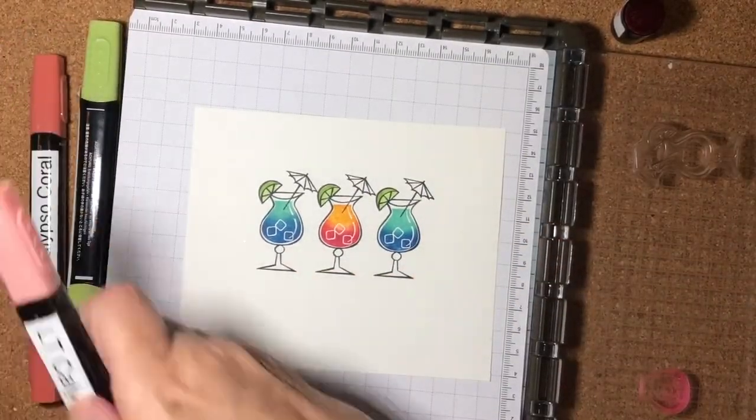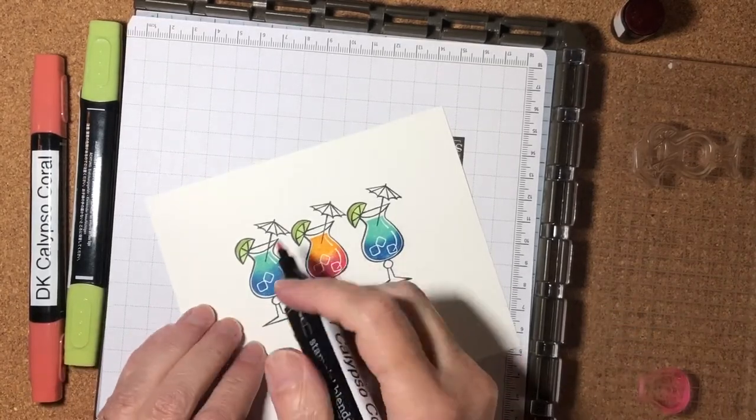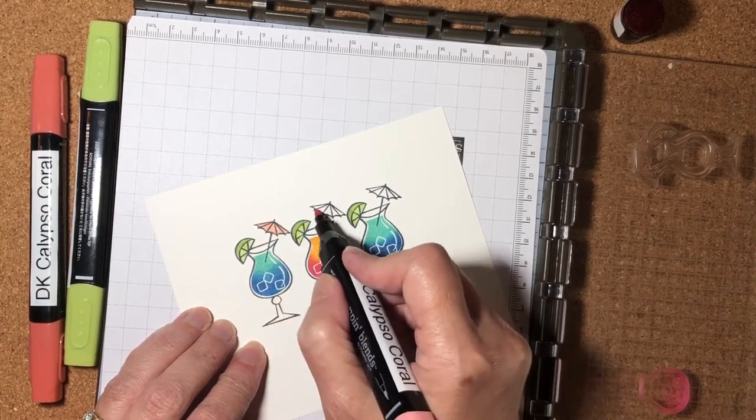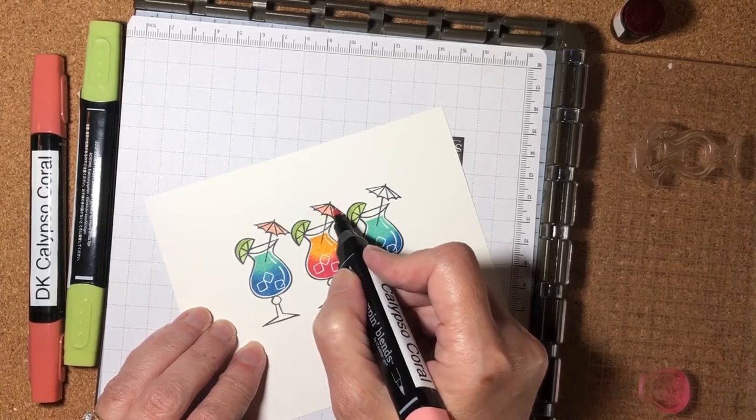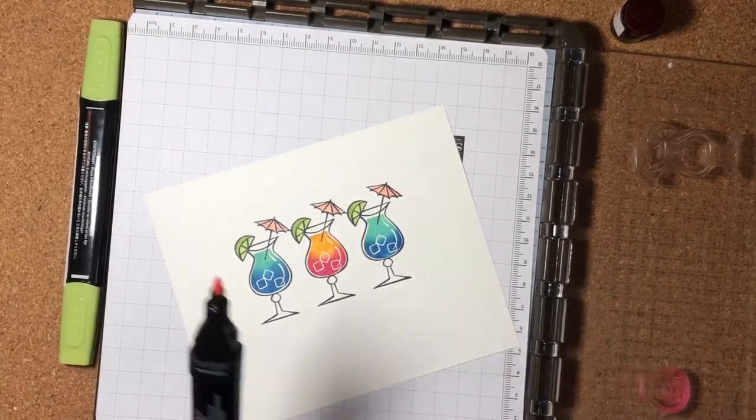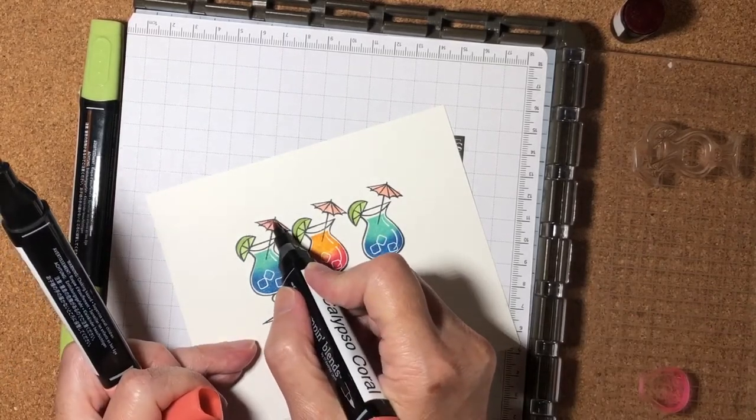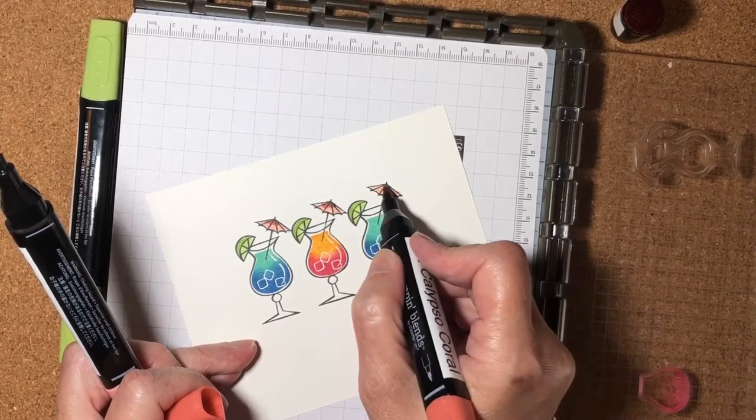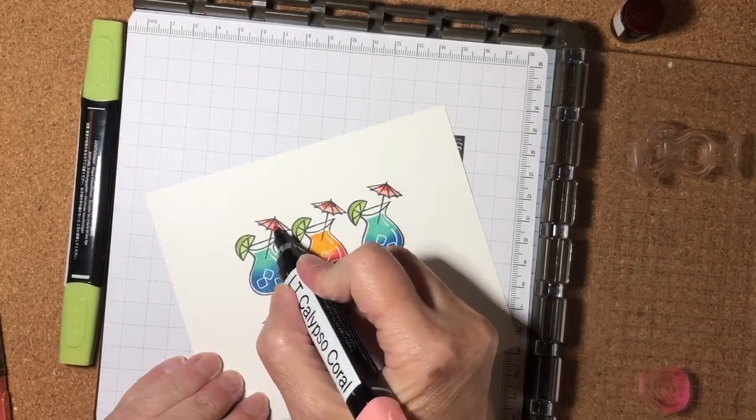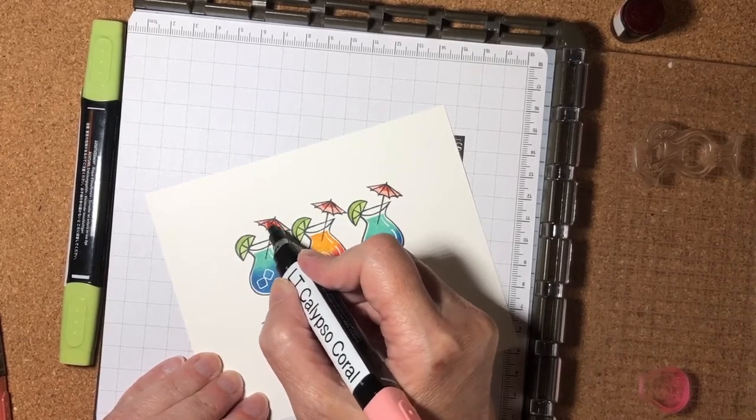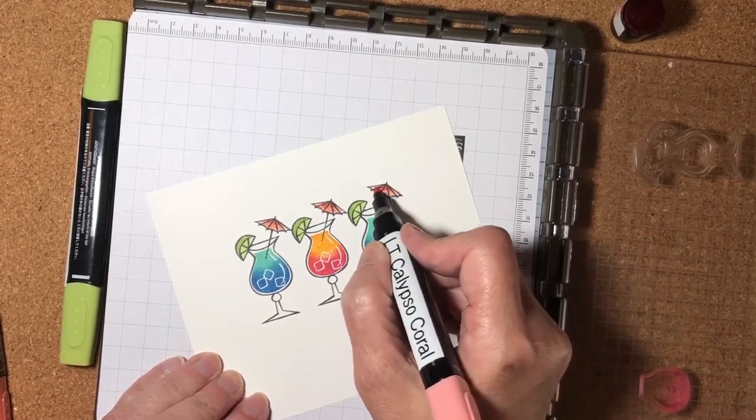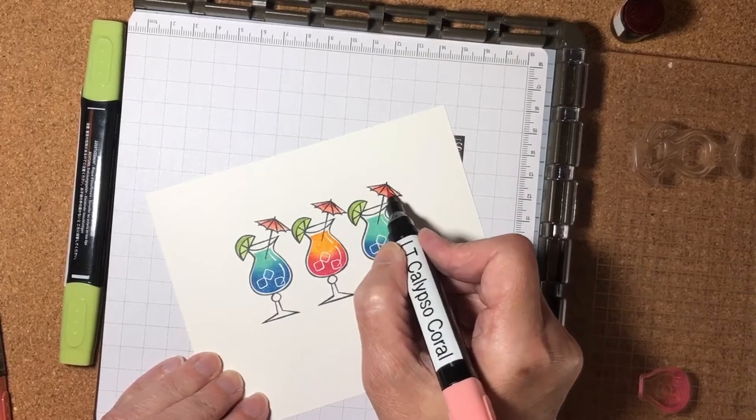Now I'm going to take my Calypso Coral colors and do the light color on the umbrellas. And then I'm going to add a little bit of the Dark Calypso Coral just on the tops, just so I can add a little bit of depth in here. And I'll blend that a little bit. Just to give those umbrellas just a little bit of depth. Isn't that fun? So these cocktails are ready to be cut and put on a card.